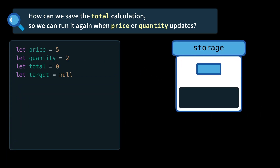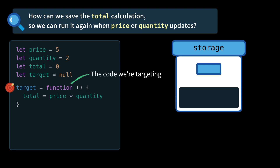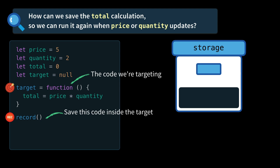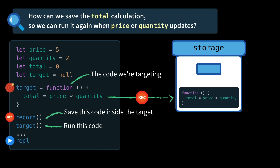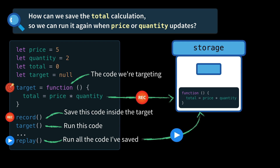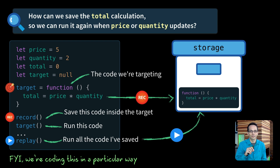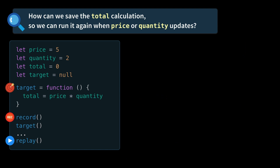So let's jump back into our example. This time we're going to have a new variable called target. Our target is the code that we are targeting for reactivity. We're going to set that equal to our new target variable. Then we'll call record, which will save this code inside the target — we'll implement that function in a minute, but basically it'll send it into our storage. Then we'll go ahead and run the target. And sometime later on when we change a variable, we need to run all the code that we've saved inside this storage device. Just so you know, there are a few ways we could code up reactivity, and we're going to be coding this in a certain way. So if it looks a little funky, just bear with me.